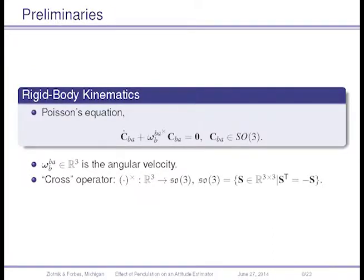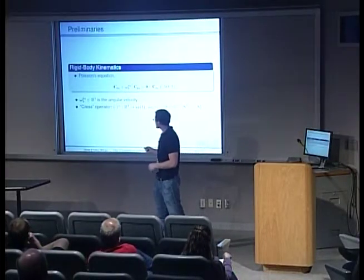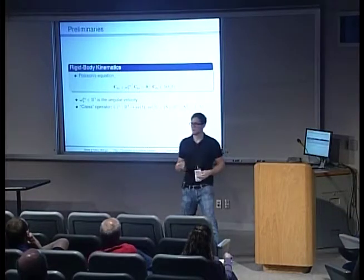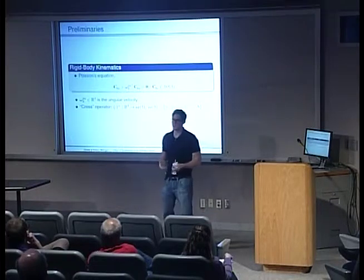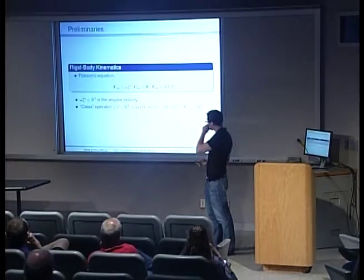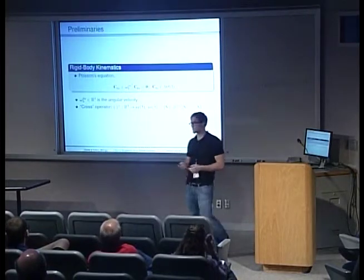Rigid-body kinematics are described by Poisson's equation, where C_BA is a rotation matrix that maps a vector in frame A to frame B. For a vehicle, frame A is the inertial frame and frame B is the body frame, so C_BA describes that vehicle's attitude. Omega is the angular velocity — the superscript B/A denotes the angular velocity of frame B relative to frame A, resolved in frame B. The cross operator maps a vector in R3 to the set of 3×3 skew-symmetric matrices.